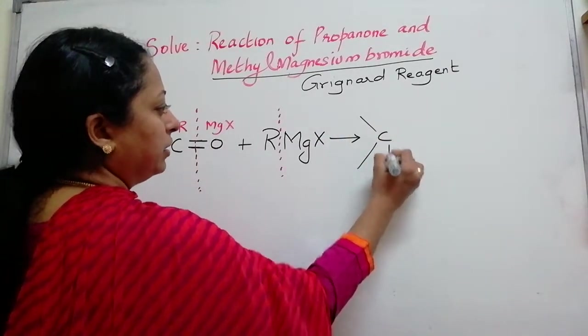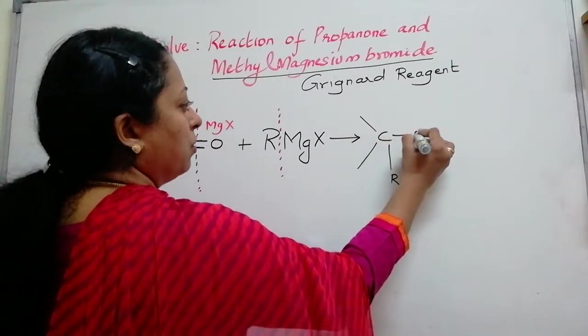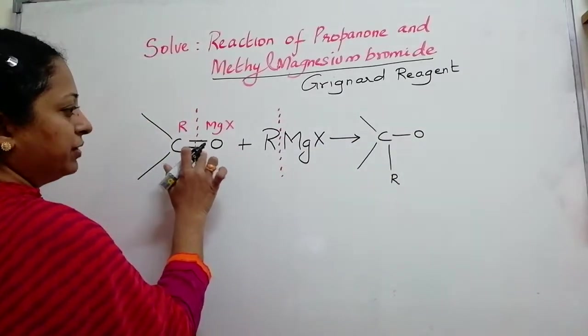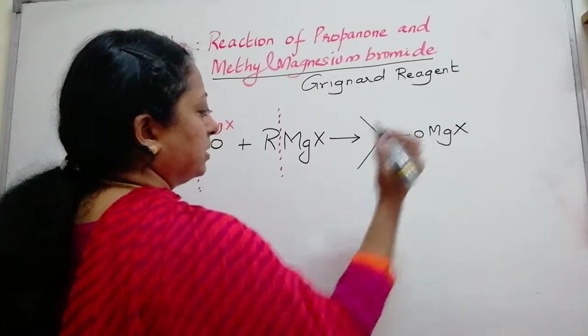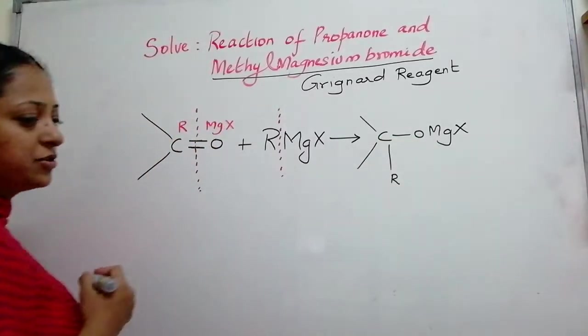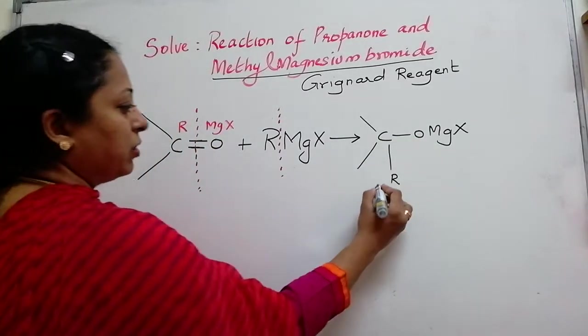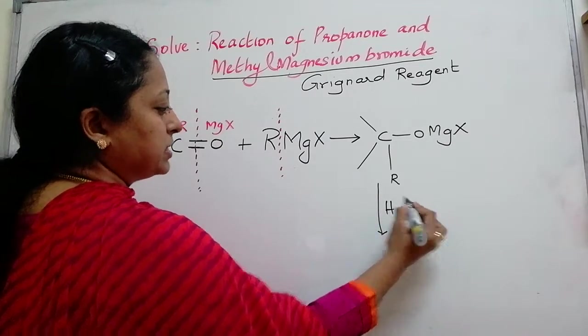It will be R attached to carbon, O because oxygen double bond will become single bond here and then MgX. So, this is like an intermediate and this intermediate always Grignard reagent is followed by hydrolysis.